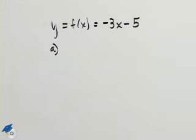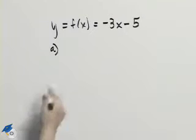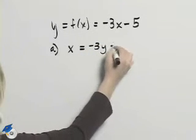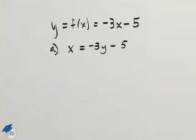We will do that by switching the x and the y and that will look like x equals negative 3y minus 5. Now remember at this point then we solve for y.